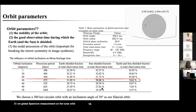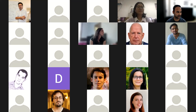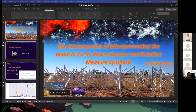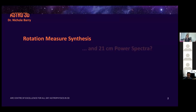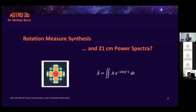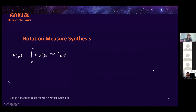Nicole Berry's talk covers the consequences of misrepresenting the beam in 21-centimeter power spectrum analysis and rotation measure synthesis. These two topics are connected because both rely on the instrument's sensitivity and on Fourier transforms, and there is a lot of similarity in the effects of poor beam modeling on both. Starting with rotation measure synthesis: you essentially want to measure the Faraday dispersion — the intrinsic polarization along the line of sight — but what you've actually measured is the linear polarization modified by the instrument's sensitivity, related via a Fourier transform of wavelength-squared.